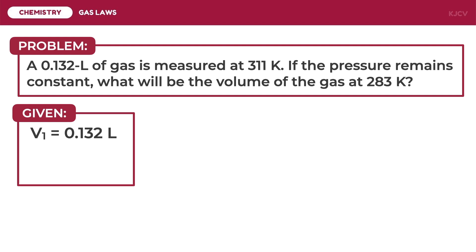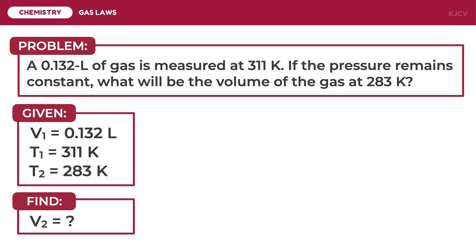0.132 liters is the initial volume. It is measured at 311 Kelvin, which is the initial temperature. Note that this is not the final temperature because it is measured together with the initial volume. The gas is at 283 Kelvin, which is the final temperature. We are asked to solve for the final volume — the volume at 283 Kelvin. Now that we have identified all variables, we can proceed to the solution.